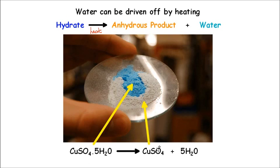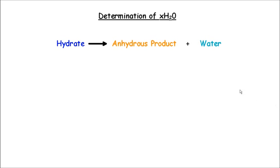Because of the law of conservation of mass, the mass on the reactant side is going to be equal to that on the product side. So if we know the masses of two of these things, we can work out the third. If in doubt, always think back to this: the hydrate gives us the anhydrous product and water.